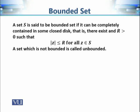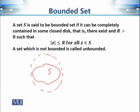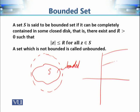A region is bounded if we can find a closed disk that completely contains the set S. For example, a bounded set S can easily be enclosed in a closed disk. The half-plane, however, is not bounded because no closed disk can completely contain it.